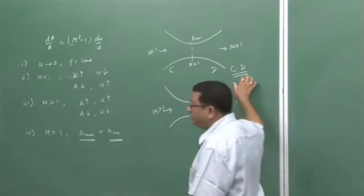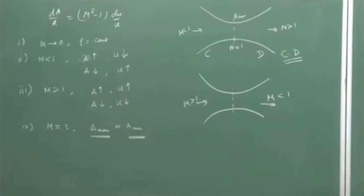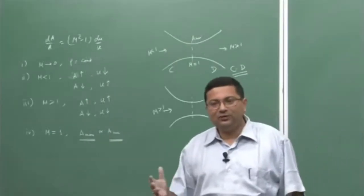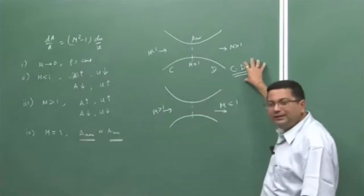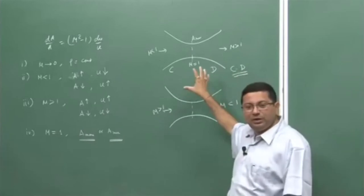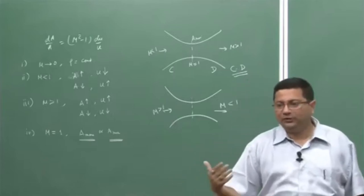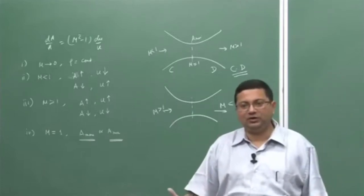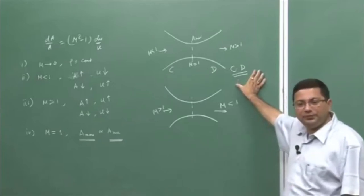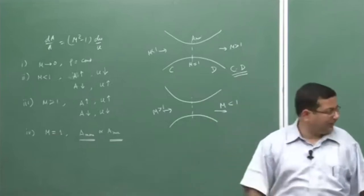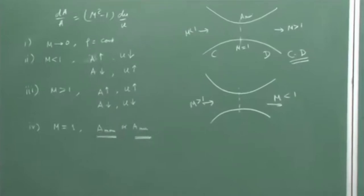This concept was first proposed by a person called de Laval. Therefore, these nozzles are called de Laval nozzles — converging-diverging nozzles are called de Laval nozzles. This is absolutely essential particularly for rocket propulsion, because we want to increase the exit velocity as much as possible to supersonic speed, and in order to get that, we need a converging-diverging nozzle. This is a recap of what we discussed in the last class.